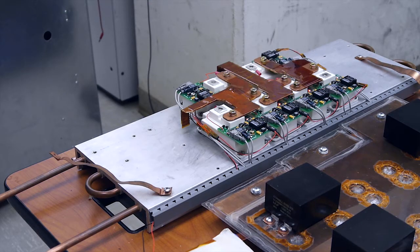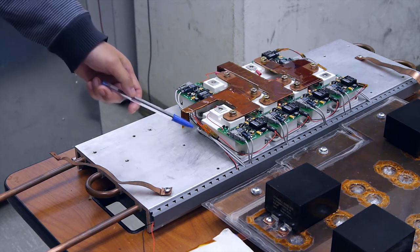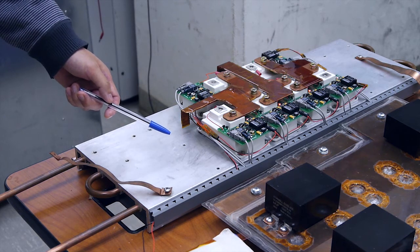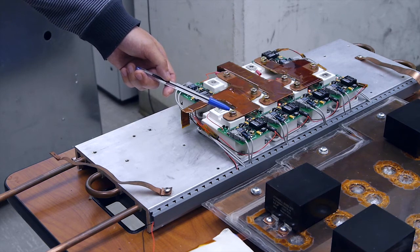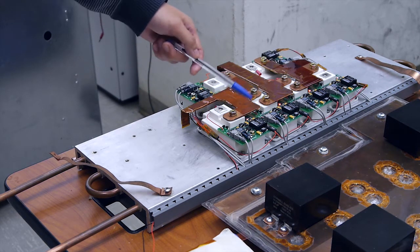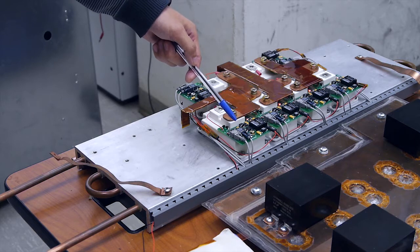Here shows the 3-level phase lag building block hardware. The devices are mounted on the cold plate of our water cooling system. The gate drivers are carefully designed to provide enough driving capabilities while maintaining a very small size to accommodate the bus bar.